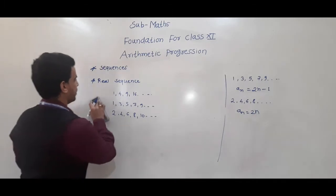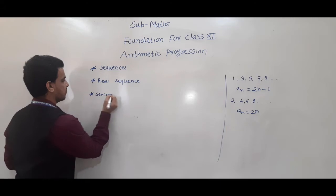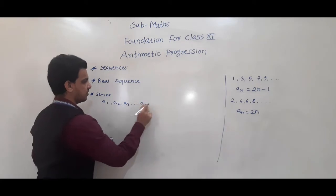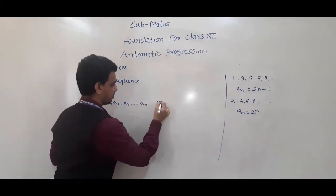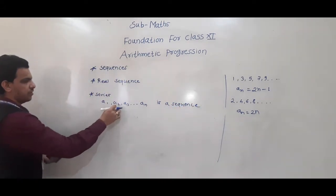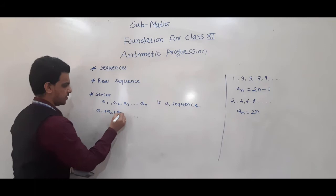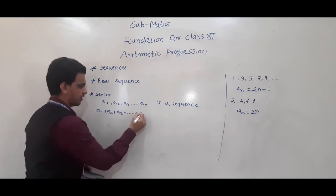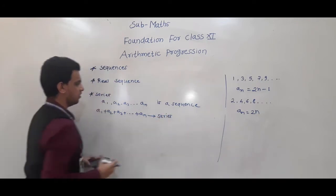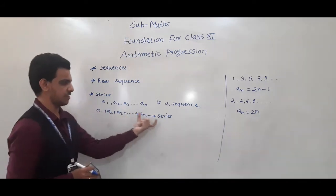Now we have a series. What is meant by series? If a1, a2, a3 up to an and so on is a sequence, then a1 + a2 + a3 + ... + an — the addition of all these terms — is called a series.